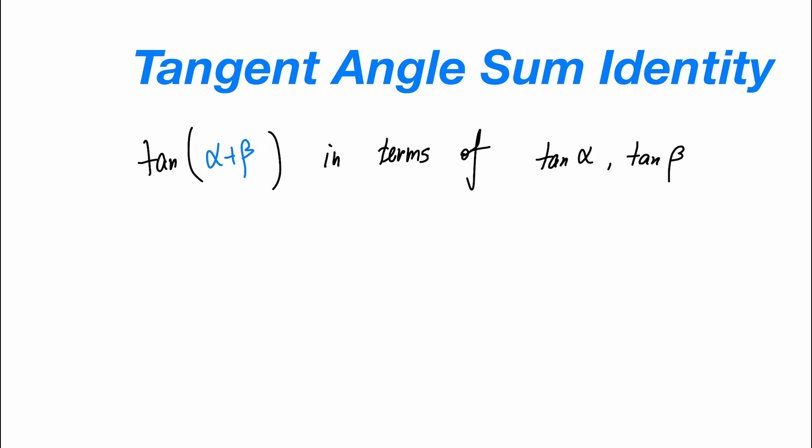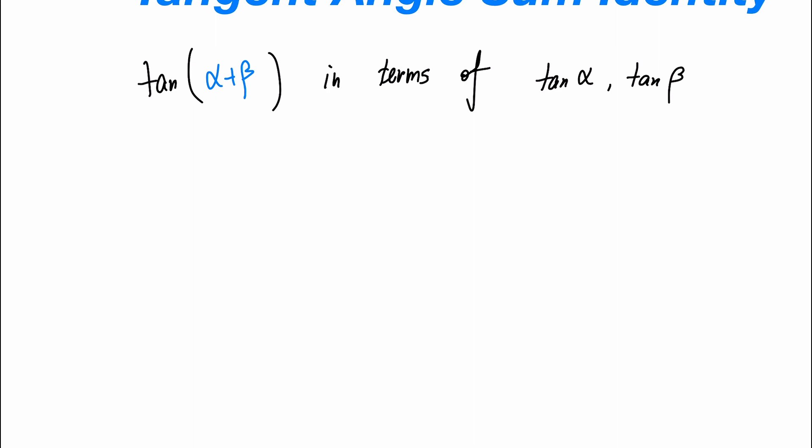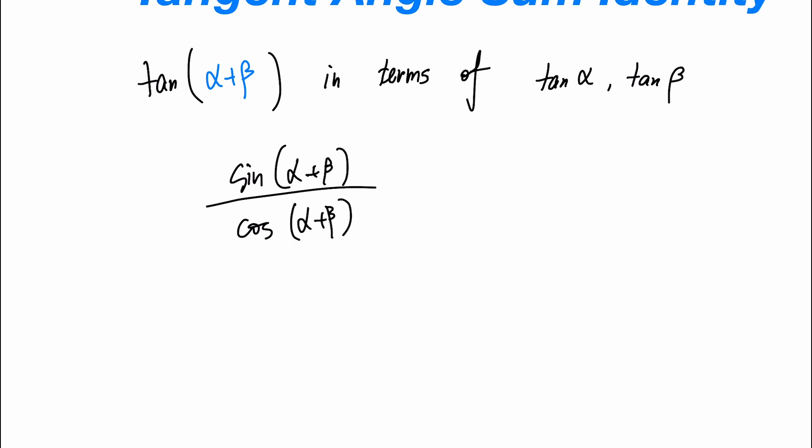Of course, you can include any constants in the expression, but for variables, we can only have tangent alpha and tangent beta. Let's try to prove this geometrically. Everyone knows that tangent equals sine over cosine, so that gives sine of alpha plus beta over cosine of alpha plus beta. But it isn't really fun to do it that way — it's very tedious algebraically. We can try to do it with geometric shapes so it becomes simpler, and finding another way to solve a problem is always better.